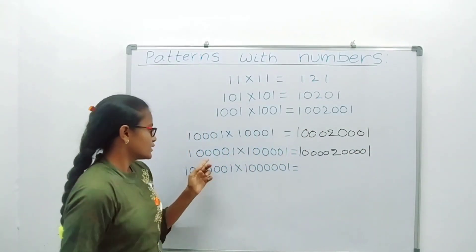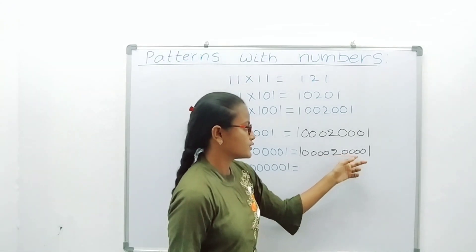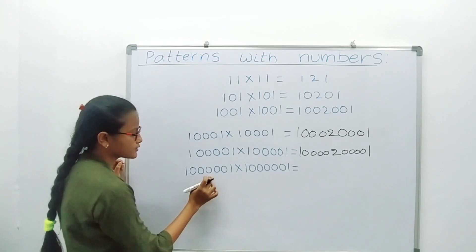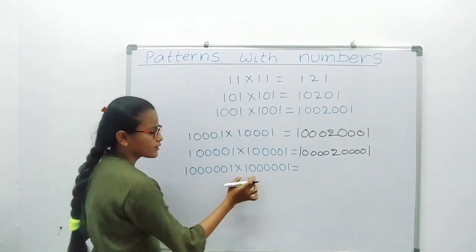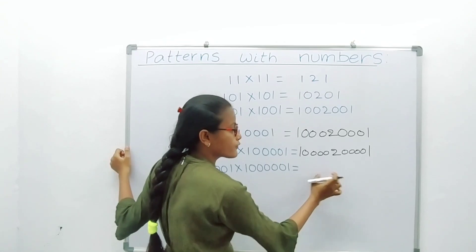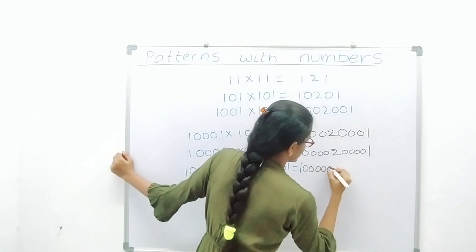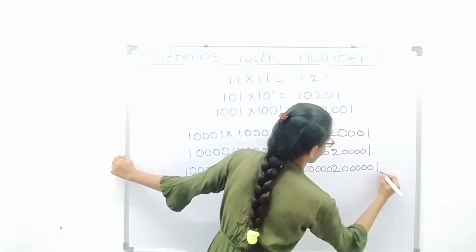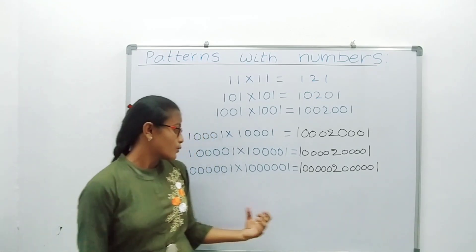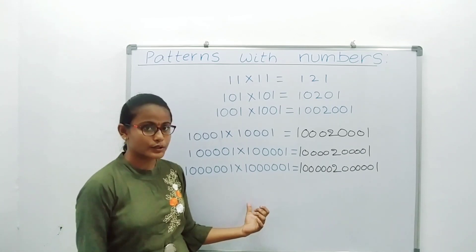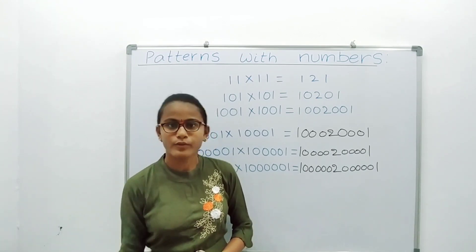10000001 into 10000001 — here we include six 0s. The answer has six 0s left and right of 2: 100000020000001. Suppose we include 1 after seven 0s: 10000000 1 into 10000000 1. The answer is: 1 after seven 0s, then 2, then seven 0s, then 1.